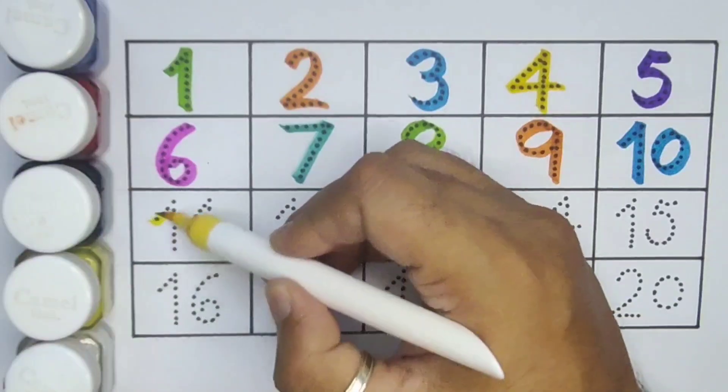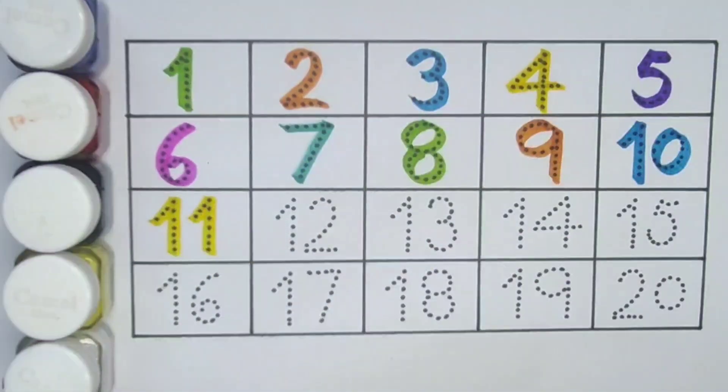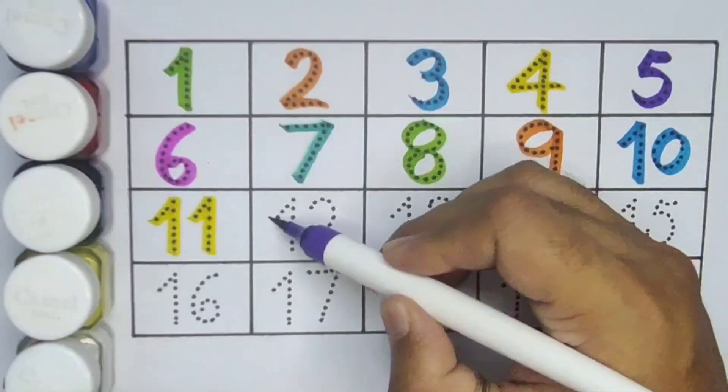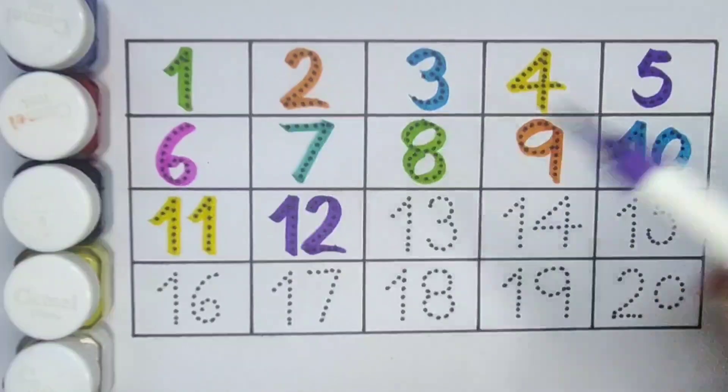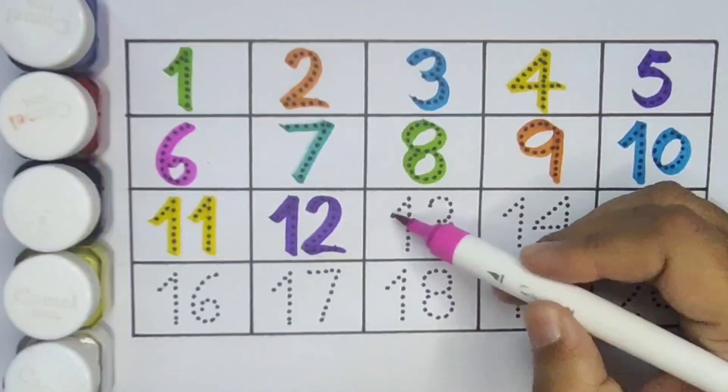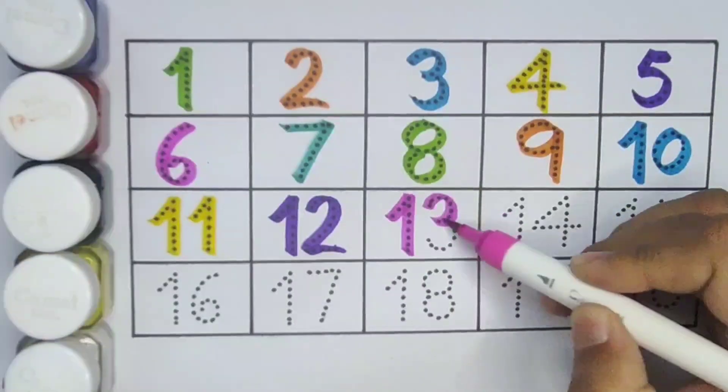Next kids, eleven, one one, eleven, number eleven. Next kids, twelve, one two, twelve, number twelve. Next kids, thirteen, one three, thirteen, number thirteen.